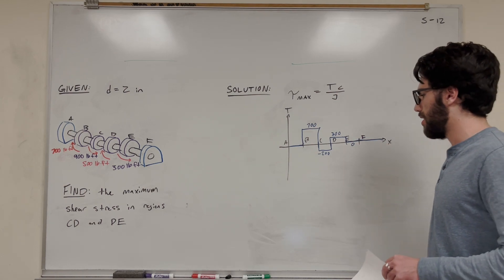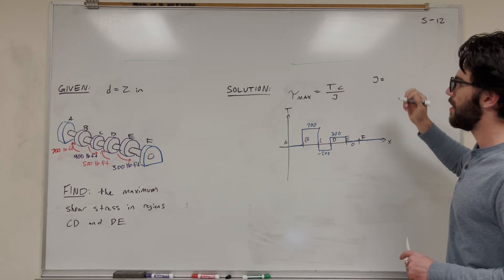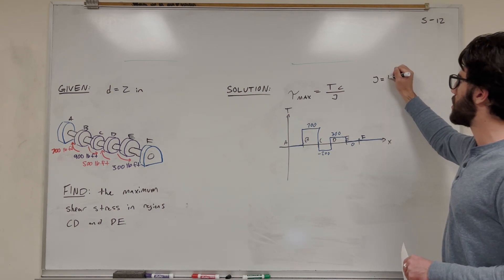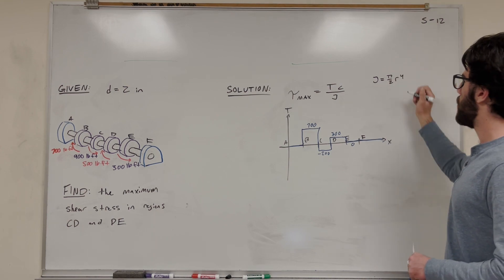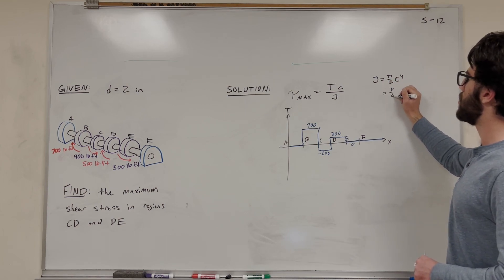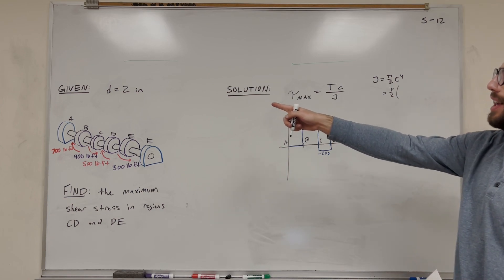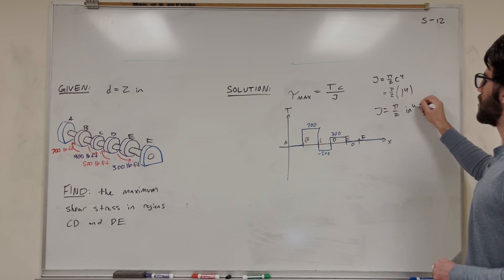So all that's left in this equation is to find the polar moment of inertia, which is J. So let's solve that up here. J for a rod like this without a hole in the center is just pi over 2 radius to the 4th. Or you might see C to the 4th, but that's radius. So let's plug in our numbers. It's going to be pi over 2. Now radius is going to be half of that diameter, so it's going to be 1 inch to the 4th. And we can just say that our polar moment of inertia is pi over 2 inches to the 4th.